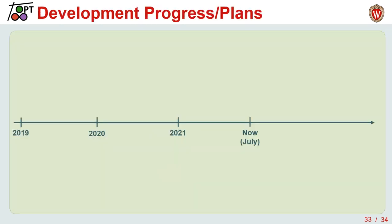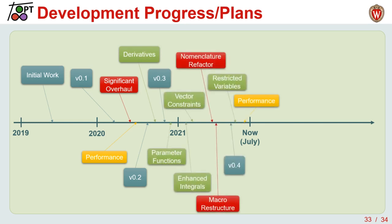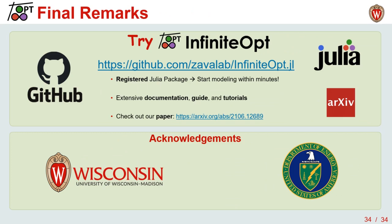In conclusion, InfiniteOpt began with initial work in 2019, releasing the first version in early 2020, then adding significant performance improvements in version 2, adding derivatives in version 3, and adding a whole range of features in the current version 4, with many plans for future development. We encourage anyone interested to reach out on GitHub. Please check out InfiniteOpt and our paper for more information. Let us know if you have any questions or comments, and I'd like to acknowledge support from the University of Wisconsin and the Department of Energy. Thank you.